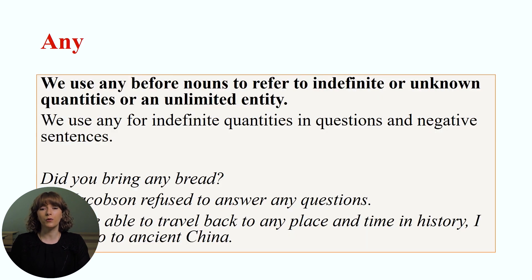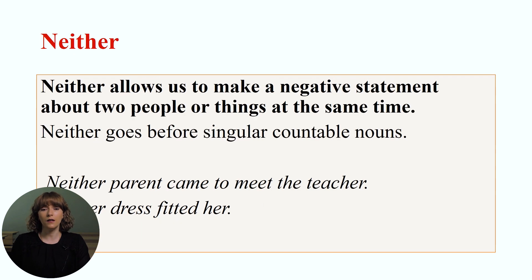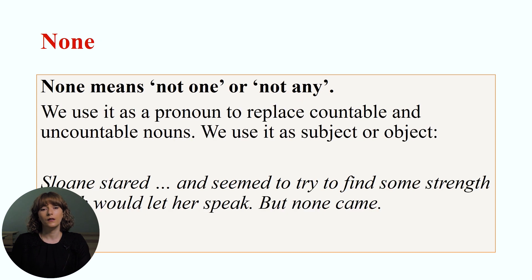We use 'any' before nouns to refer to indefinite or unknown quantities or an unlimited entity. 'Neither' allows us to make a negative statement about two people or things at the same time. 'None' means not one or not any.